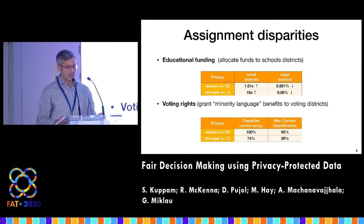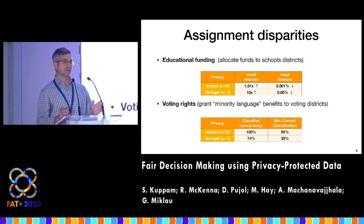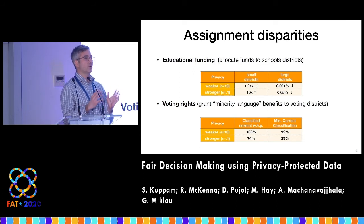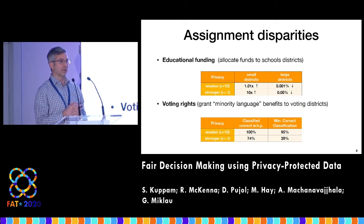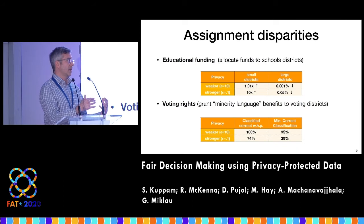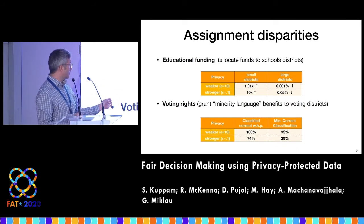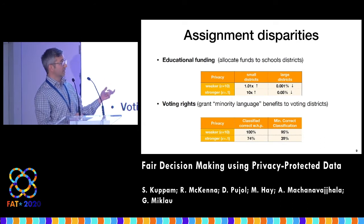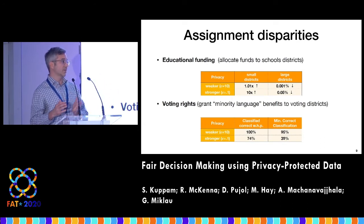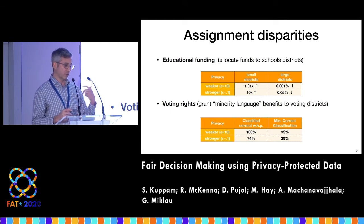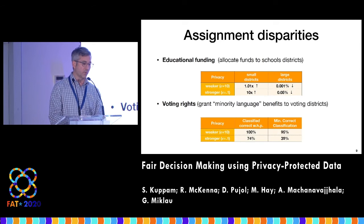In the voting rights case, the measures were a little different. We're concerned with voting districts that have a very low likelihood of getting classified correctly. The worst case is when a district that deserves the benefits gets misclassified and loses them. What you find are disparities like some districts being classified correctly with almost 100% probability, while other districts are classified correctly less than half the time under random trials of the privacy mechanism.